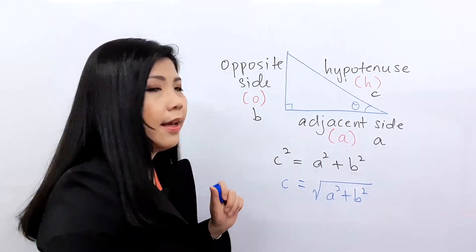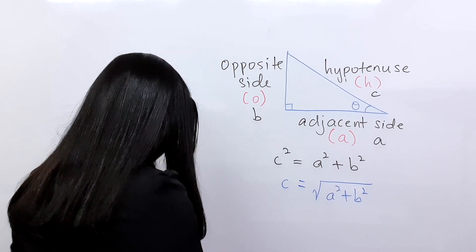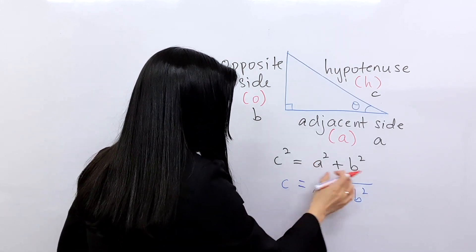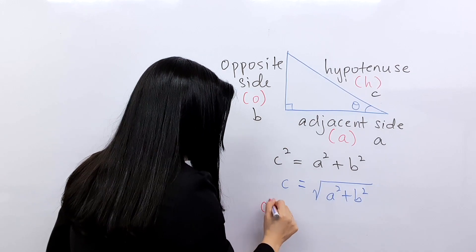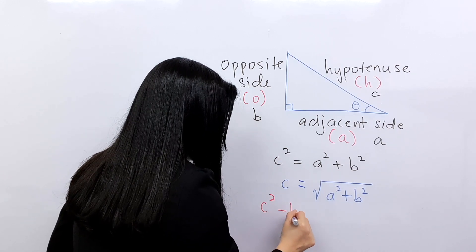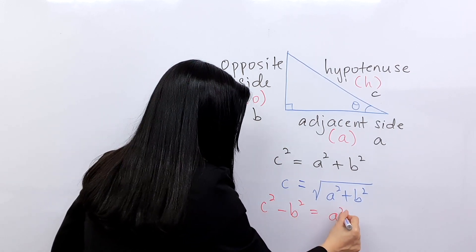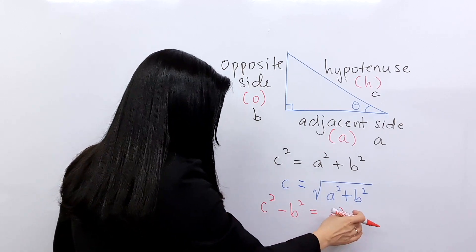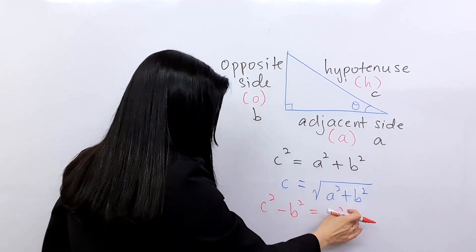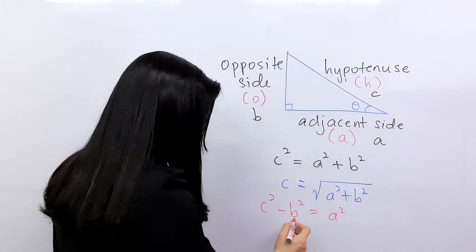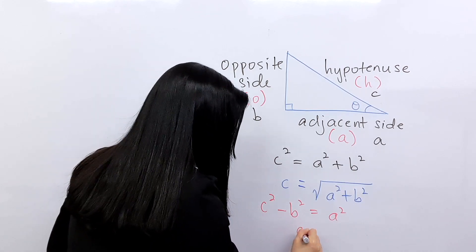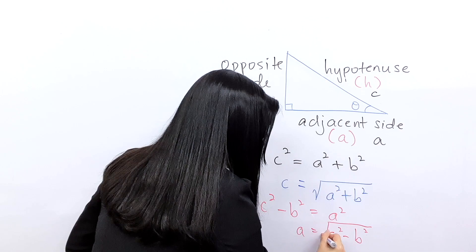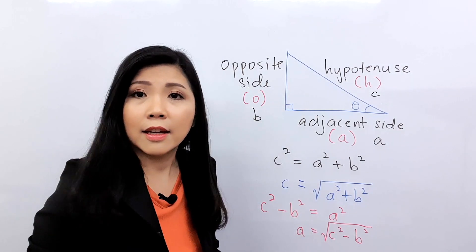If I want to find A, it's very easy. The A is over here, so I need to move B squared over. It becomes C squared minus B squared equals A squared. So in order to find A, I shift the square over and it becomes the square root of the whole thing. Therefore, A equals the square root of C squared minus B squared.